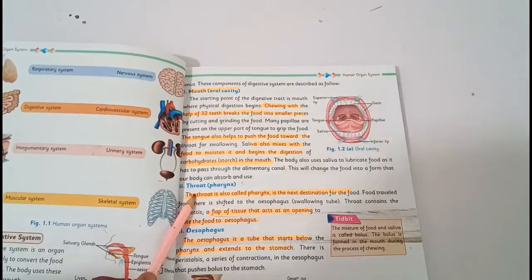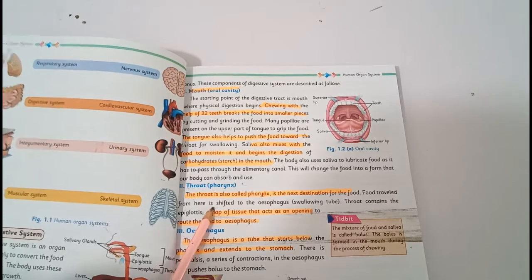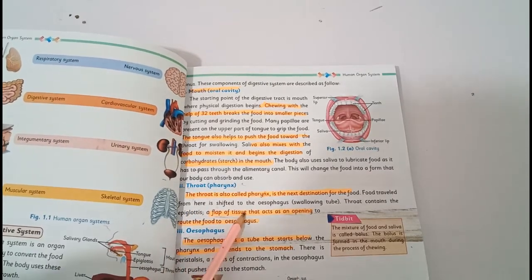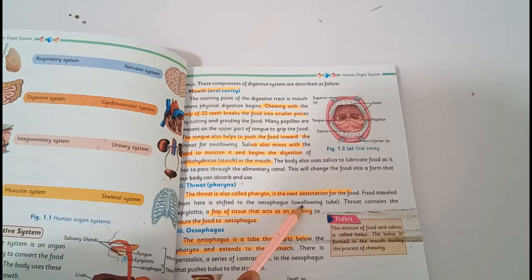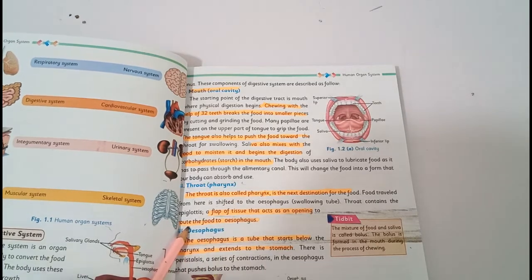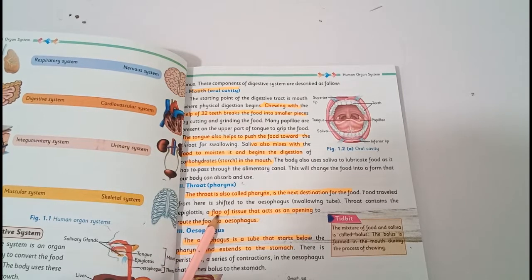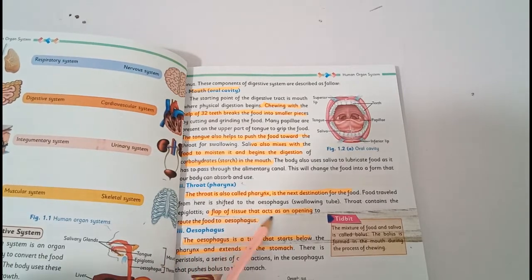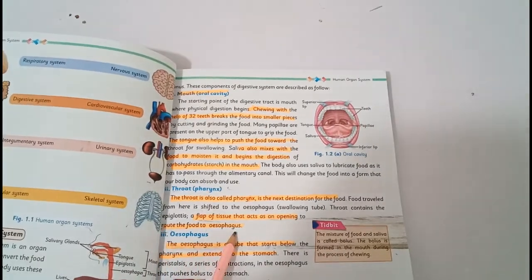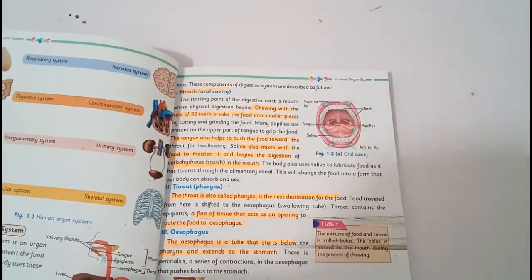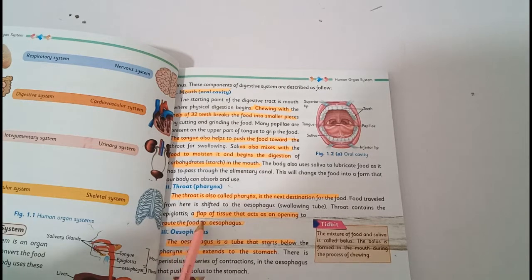The next part is throat, also called pharynx. The next destination for the food is pharynx. Food travels from here to the esophagus. The throat has a special flap of tissue that acts as an opening to route the food into the esophagus.